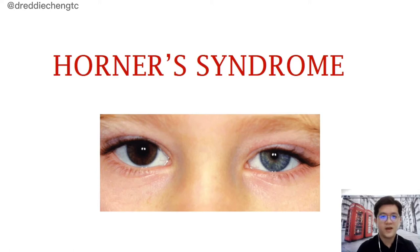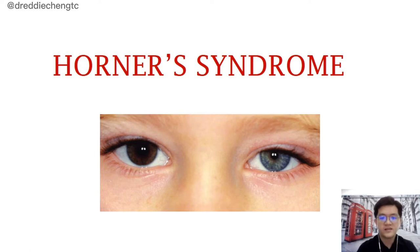Today I'm going to share with you regarding Horner's Syndrome, which is also called ocular sympathetic paresis. It comprises a constellation of clinical signs, including the classic triad of ptosis, miosis, and anhydrosis.